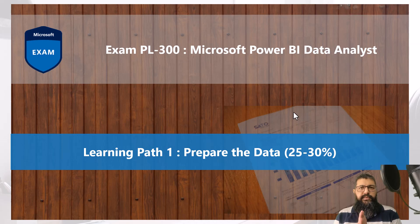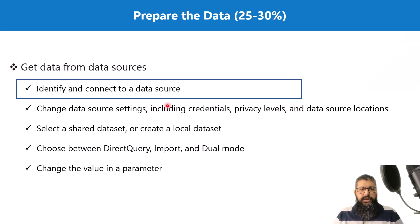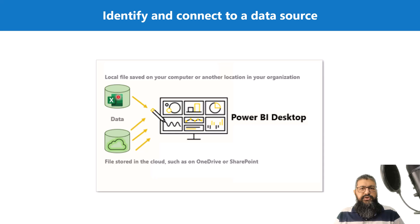Welcome back to the PL-300 exam preparation course. Today we are going to start our first learning path: Prepare the Data. The first section within this learning path is 'Get Data from Data Sources,' and this video is about the first topic: identify and connect to a data source. Normally, once we talk about a data source, we have to first identify where our data source is.